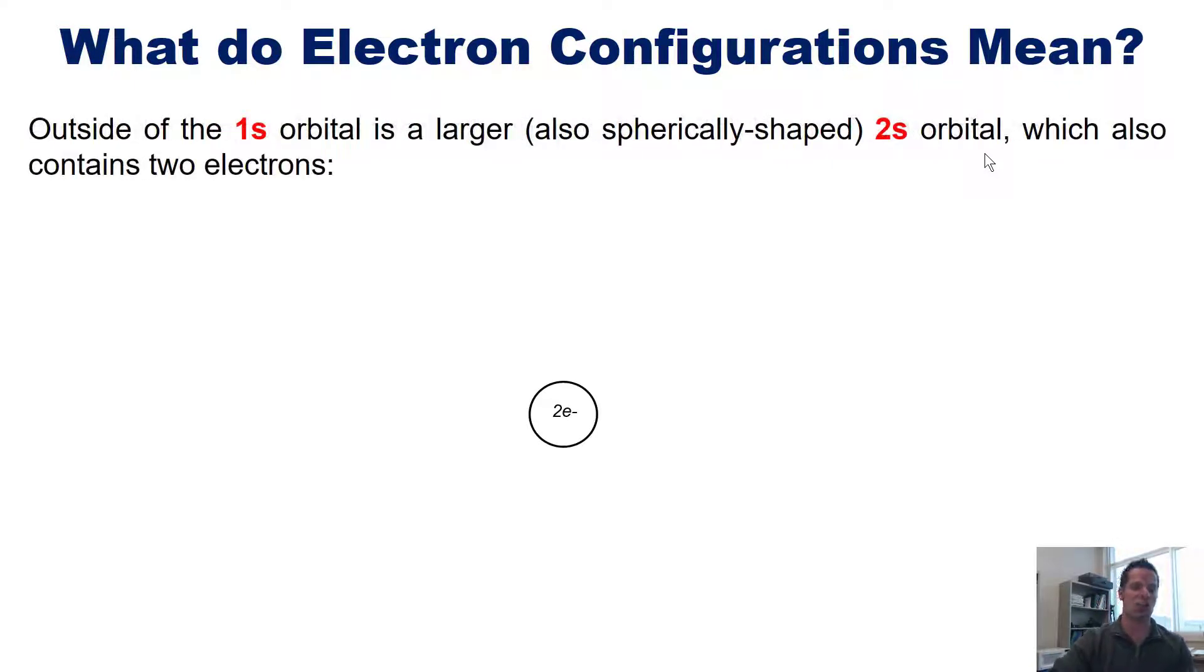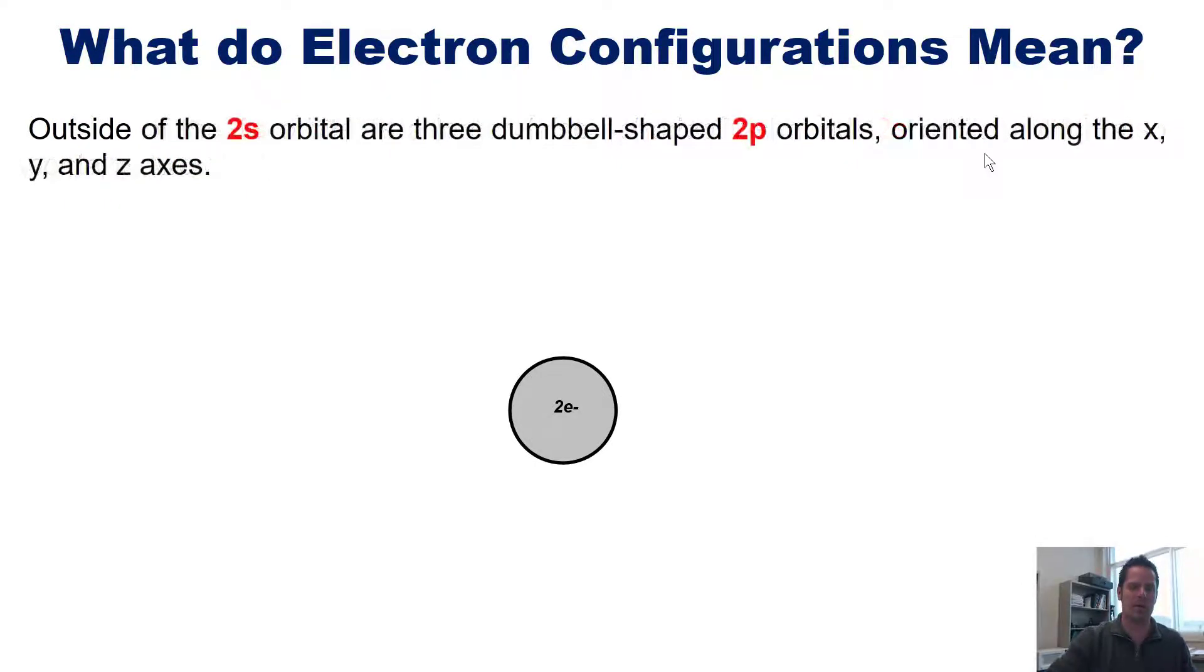Now, outside of that 1s orbital is a larger, also spherically shaped, 2s orbital, like this. So that 1s is kind of buried inside it. And this also contains two electrons. So at this point, I would say 2s2 to indicate this orbital and the two electrons that are in it. Now, kind of a little bit outside of that 2s orbital and straddling the nucleus, there are three individual dumbbell-shaped 2p orbitals. One is along the x-axis, one along the y, and one along the z-axis, like this. This is the 2p shell.